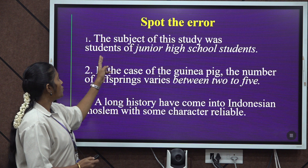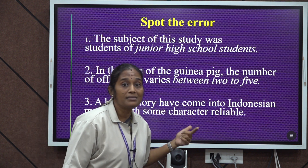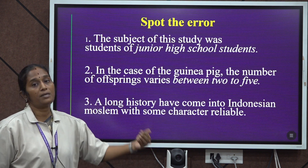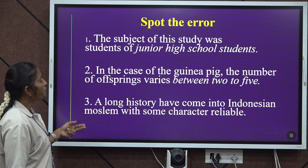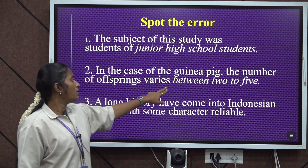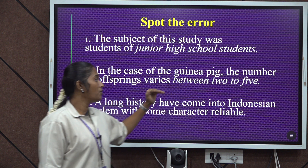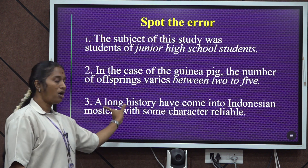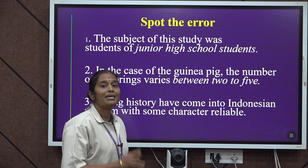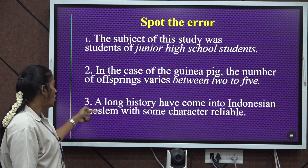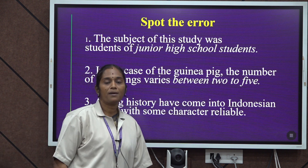Next, redundancy error: 'The subject of the study was students of junior high school students' — using 'students' twice is repetitive and confusing for the audience. Then, 'between' must always be followed by 'and' as a conjunction. Finally, 'A long history have come' is wrong — it should be 'A long history has come into Indonesian Muslim with some reliable character.'